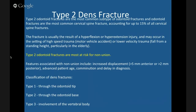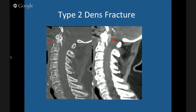Type 2 dens fractures are the most common dens fractures and unfortunately the greatest risk for nonunion. Type 1 is through the dens tip; Type 2 is through the base; Type 3 is through the body as well as the dens. Type 2 is the most common and most prone to nonunion. It can produce significant posterior displacement making it very unstable. This is demonstrated on both sagittal CT bone windows and soft tissue windows.